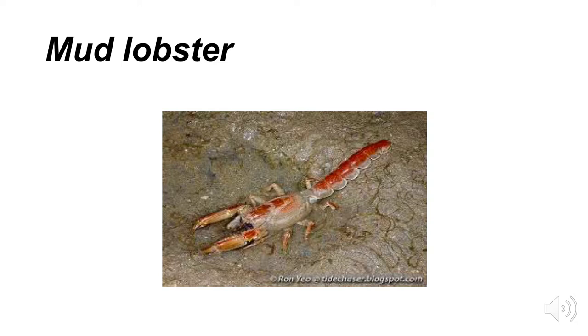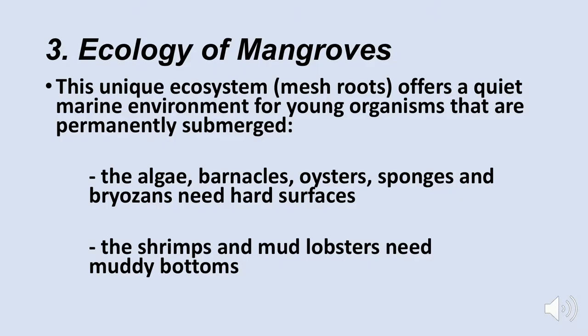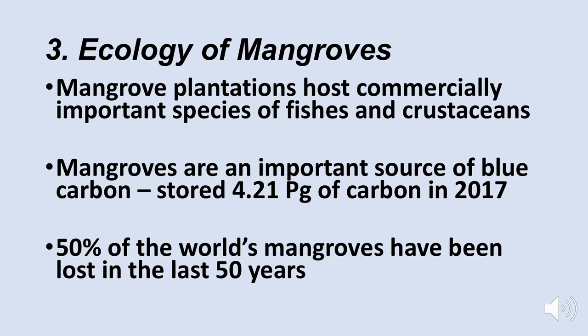Hundreds of species of birds depend on mangroves for their food. You've got algae, barnacles, oysters, sponges, and bryozoans needing hard surfaces, which the mangrove roots provide. And because mangroves collect sediment, organisms that thrive on muddy bottoms — such as shrimp and mud lobsters — thrive there too. Some people call them mangrove plantations; in some places mangroves are actually planted because they host important species of fish and crustaceans.